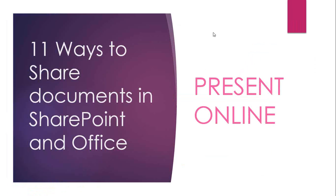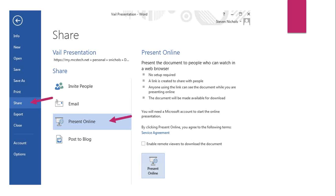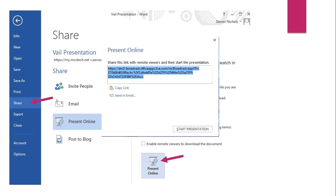The next option is presenting online. In my role I talk to a lot of clients, and sometimes setting up a full webinar or WebEx session isn't worth the time. So I create a regular conference call, get on the phone with the person, and use the Present Online feature in Office to show them the document. I go to File, click Share, click Present Online, and that creates a link. That link can be sent to anyone via email or copy link — hundreds or thousands of people, or just a few. When I click Start Presentation, it opens the document in a browser and they can watch me scroll through slides in PowerPoint or look through a Word or Excel document — just like a webinar, with no setup required.